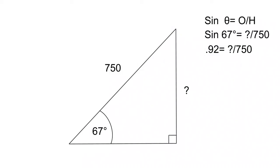Let's take a look. Using cross multiplication, we end up with our unknown is equal to 0.92 times 750, which gives us a numerical value of 690. So let's punch that into our side of triangle here.